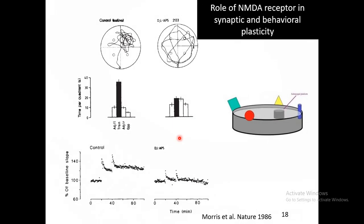If you block the NMDA receptor — the main route of calcium entry via this coincidence detector — synaptic strength cannot be altered and does not increase. Also, animals where the NMDA receptor was blocked by a pharmacological agent have certain difficulties in spatial navigation tasks in the Morris water maze.